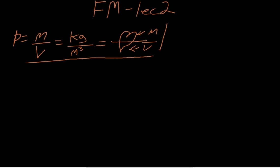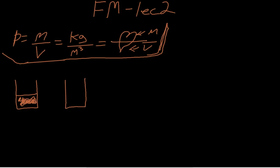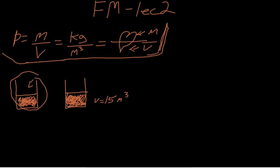So now you're probably wondering, what exactly is density? Well, pretend that you have two containers with two liquids of the same volume — say 15 meter cubed each. One is filled with cooking oil, the other with water. I'm going to tell you that the cooking oil is less dense than the water. So what exactly makes it less dense if they both have the same volume?